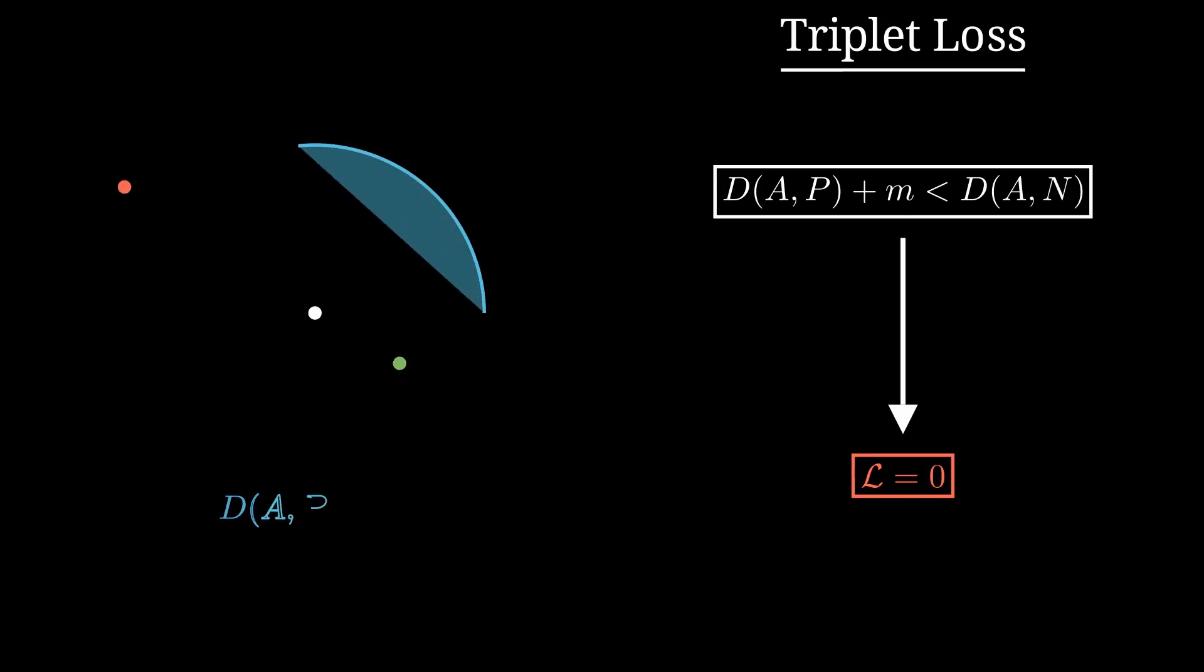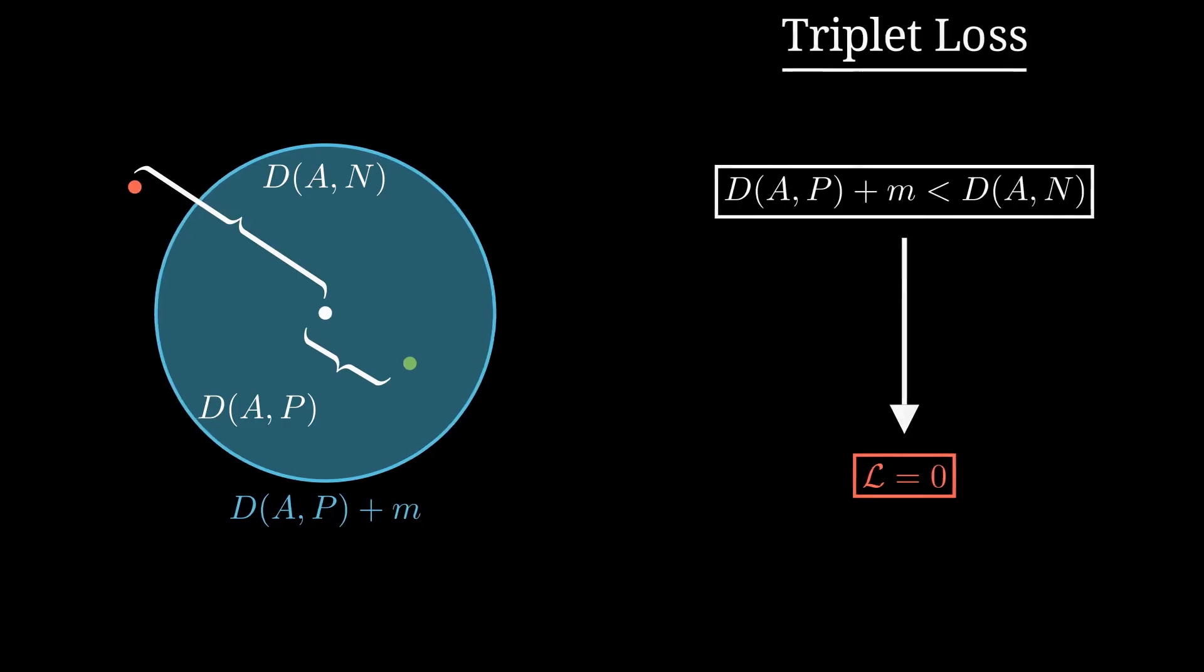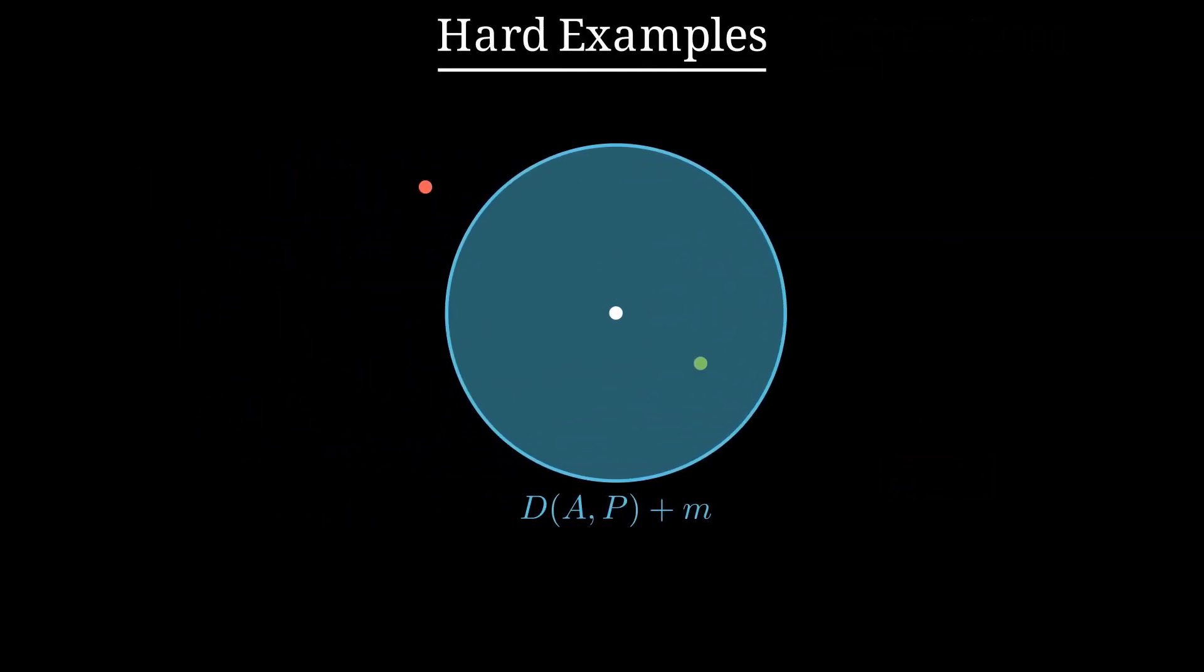And the same principle applies to the triplet loss. If the negative example is already farther from the anchor than the positive, the loss will again be zero. Essentially, the model is doing its job well enough that there's nothing more to learn from these particular samples. To effectively train the network, we need to focus on hard examples.